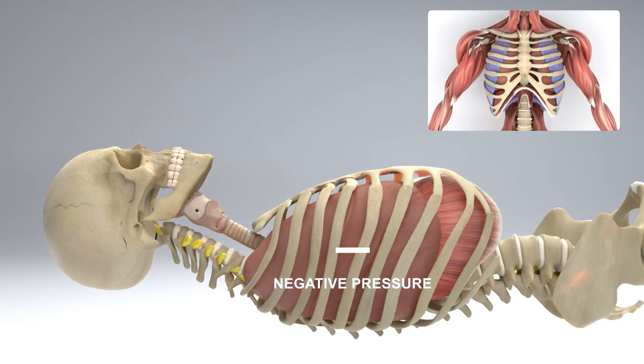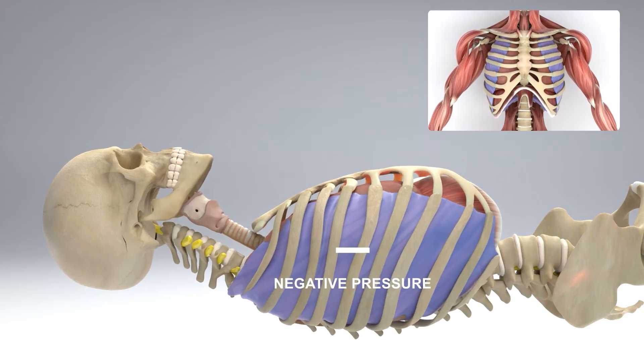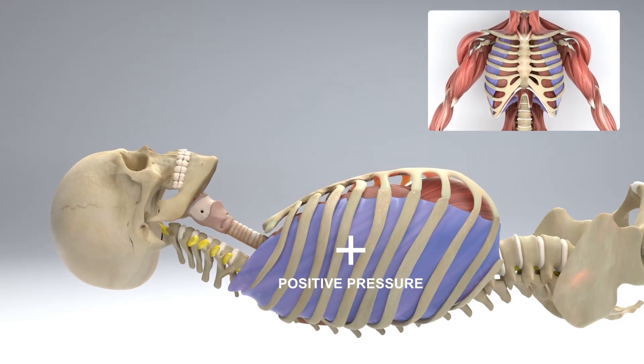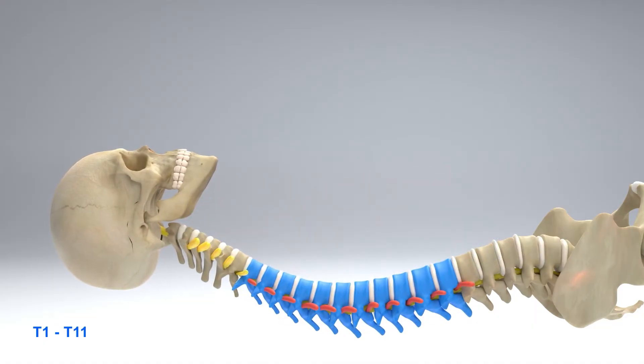The intercostals have two layers that either lift or compress the ribcage when we breathe in or out. Their nerve supply is from T1 to T11 in the spinal cord.